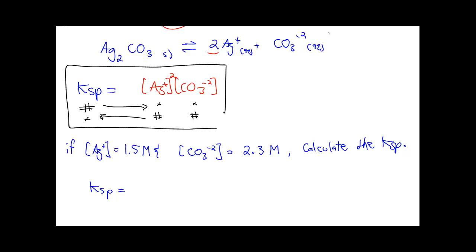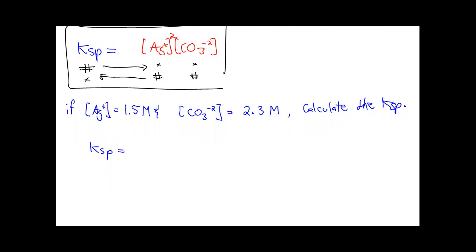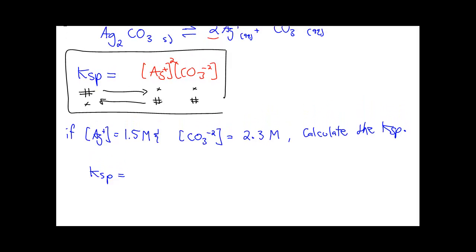Those are the only two styles of questions you're going to get in this chapter — there are a few more details to add about ratios and things, but if you can understand this, you are golden. Here's a very simplistic example to end off this introduction. Using the same equilibrium with the same KSP expression: the concentration of Ag⁺ is 1.5 and concentration of CO₃²⁻ is 2.3. The KSP equals 1.5 squared times 2.3. Plug it into your calculator — I get an answer of 5.2. That's it. The KSP is 5.2.